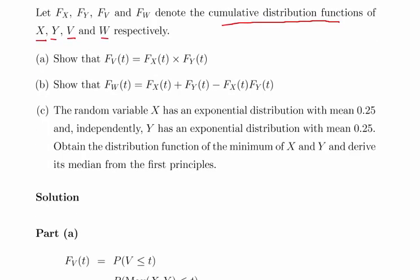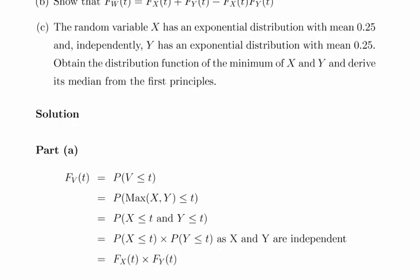Lastly, there is a part on the exponential distribution. The random variable X has an exponential distribution with a mean of 0.25, and independently Y has the same distribution. We need to obtain the distribution function of the minimum of X and Y and derive its median from first principles. We'll come back to that later.